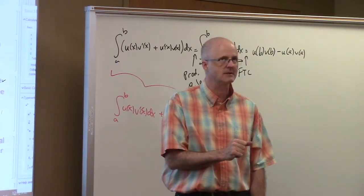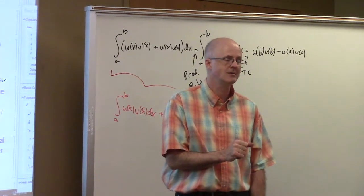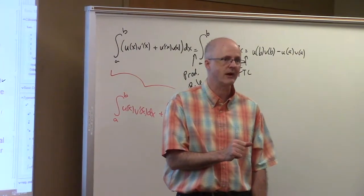The formula for the area of a semicircle is pi r squared over 2, instead of pi r squared.